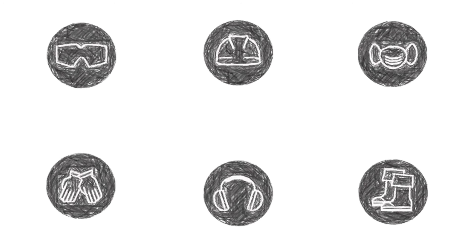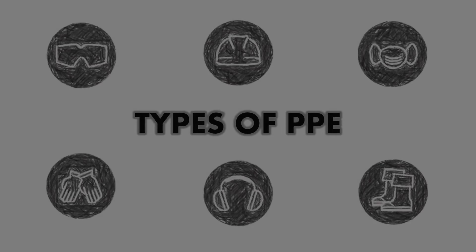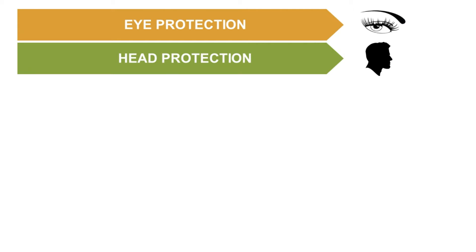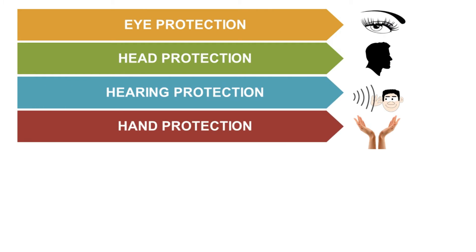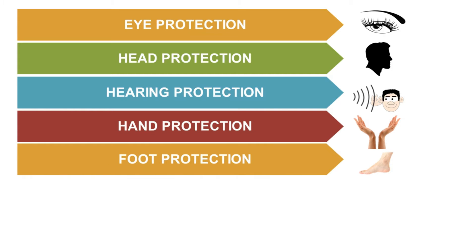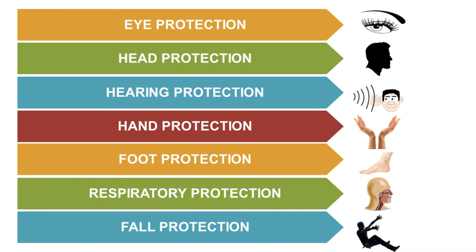Let us discuss about types of PPE. The types of PPE are eye protection, head protection, hearing protection, hand protection, foot protection, respiratory protection, and fall protection.